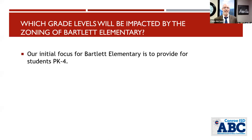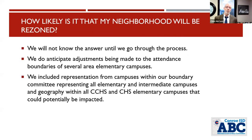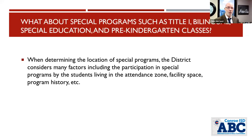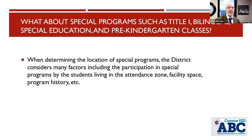What grade levels are initially anticipated to be impacted by Bartlett? Pre-K through 4. How likely is it that my neighborhood will be rezoned? We don't really know until we get through the process. We're going to work through it, vet it, and all 44 people on the committee representing all schools — principals and parents — will ultimately make a recommendation to the school board. Special programs will be determined at the end — we'll see how we are on space and availability and what the zones look like, and then make good decisions for things like Title I, bilingual, special education, and pre-K classes.